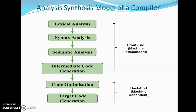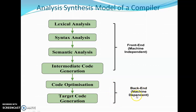We'll see the analysis-synthesis model of a compiler. Compilation is done by different phases: lexical analysis, syntax analysis, semantic analysis, intermediate code generation, code optimization, and target code generation. The first four phases are included in the front end — they are machine independent, making up the analysis part. The last two phases are included in the back end — they are machine dependent, making up the synthesis part.